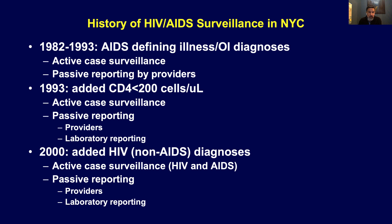In terms of the history of surveillance in New York City: like the rest of the country from 1982 to 1993, it was really about AIDS-defining illnesses and opportunistic illness diagnoses. In 1995, the serologic test was added. In 1993, a CD4 laboratory test was added, so all CD4 counts less than 200 by labs would be reportable, combined with active surveillance and passive reporting — now including laboratory reporting in addition to provider reporting. And in 2000, the surveillance system was expanded greatly to include active surveillance for both HIV and AIDS, with passive reporting by providers and labs.